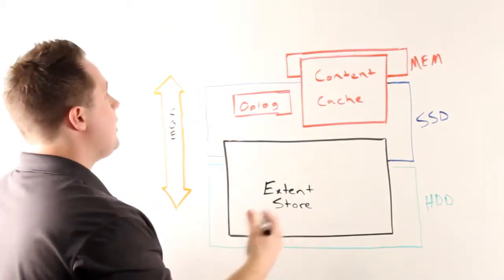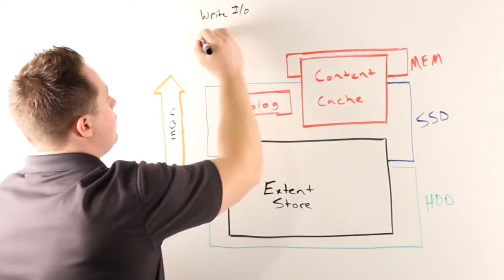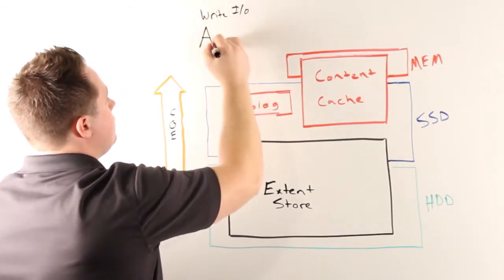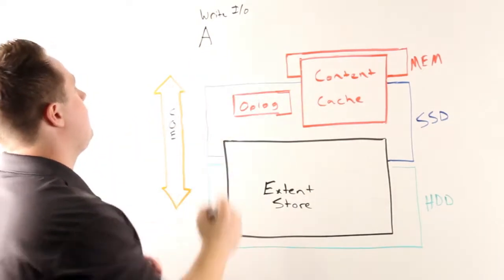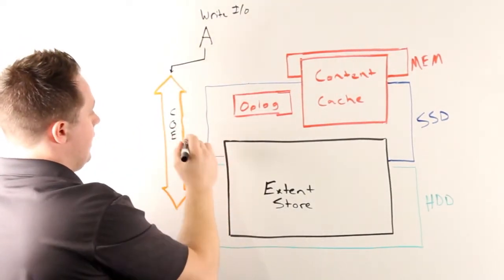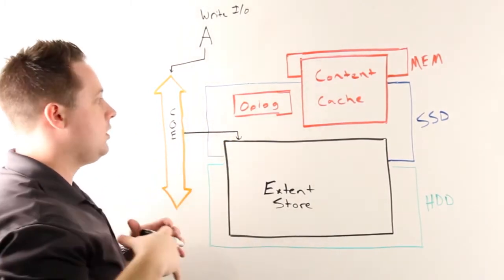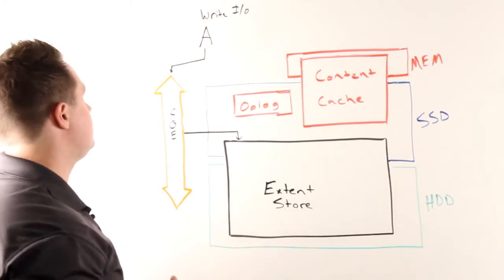For inline compression, it's handled in two ways. We have our traditional write I/O come in, and for larger I/Os, these will go directly to the capacity optimization engine and be compressed within memory before being written to the extent store. This is all done purely inline before it hits the actual disk device.